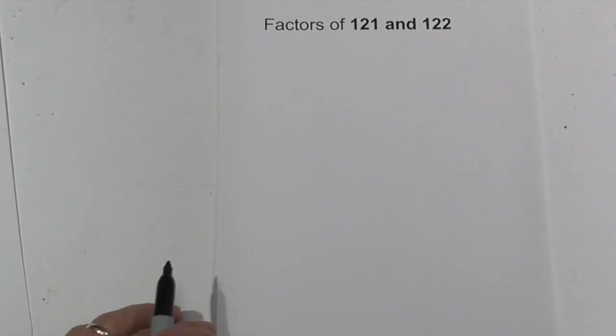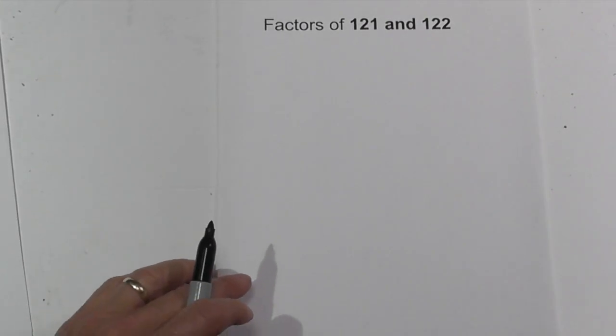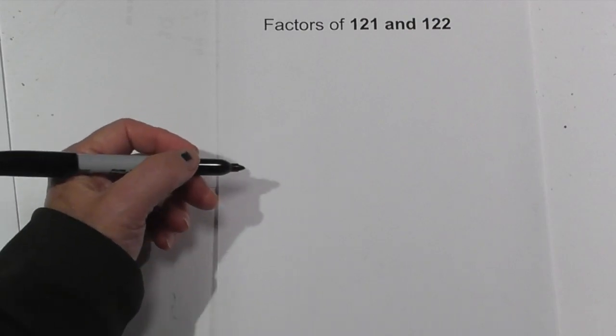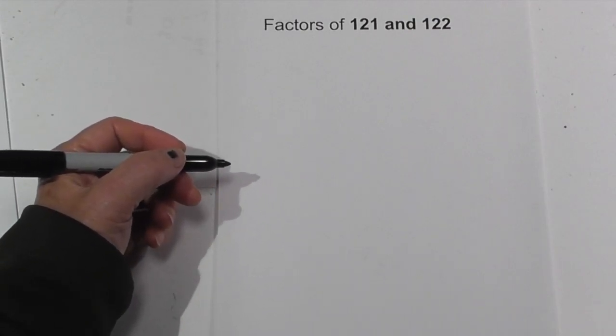Welcome to MooMooMath and Science and the factors of 121 and 122. They're both composite numbers, so let's go ahead and get started.